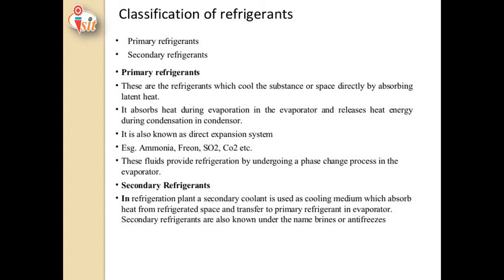This high-pressure, low-temperature liquid refrigerant then flows through the throttle valve or expansion valve, where pressure drops considerably, producing low-pressure, low-temperature liquid refrigerant. It finally flows through the evaporator where it absorbs heat during evaporation. That is why primary refrigerants are also known as direct expansion systems. Examples of primary refrigerants include ammonia, Freon, sulfur dioxide, and carbon dioxide. These primary fluids provide refrigeration by undergoing a phase change process in the evaporator.